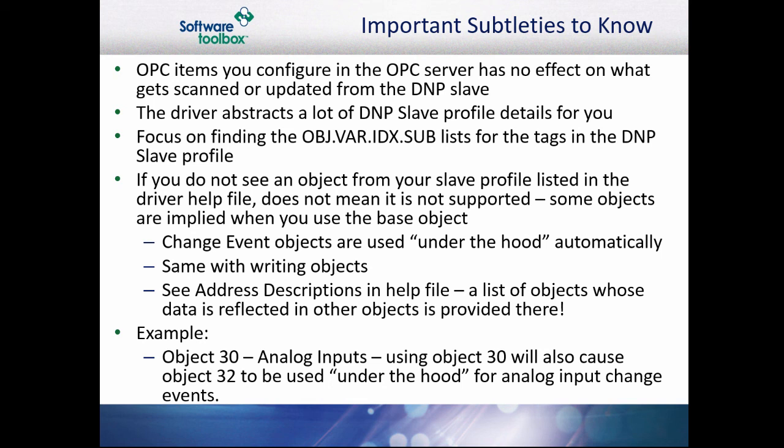The important part is to focus on finding the addressing list in your slave profile. This process could take some time. If you understand DNP3 addressing and your DNP3 slave device vendor has provided a clear and concise document, this process will not be too difficult. If you don't see an object number from your slave profile list and the address is supported by the server, this does not mean it isn't supported. Some objects are reflected or addressed under the hood using a base object. There is great detail in the help file about these objects. For example, if you wish to read from object 32, you would address that by using the correct variation for object 30 to cause object 32 to be used.